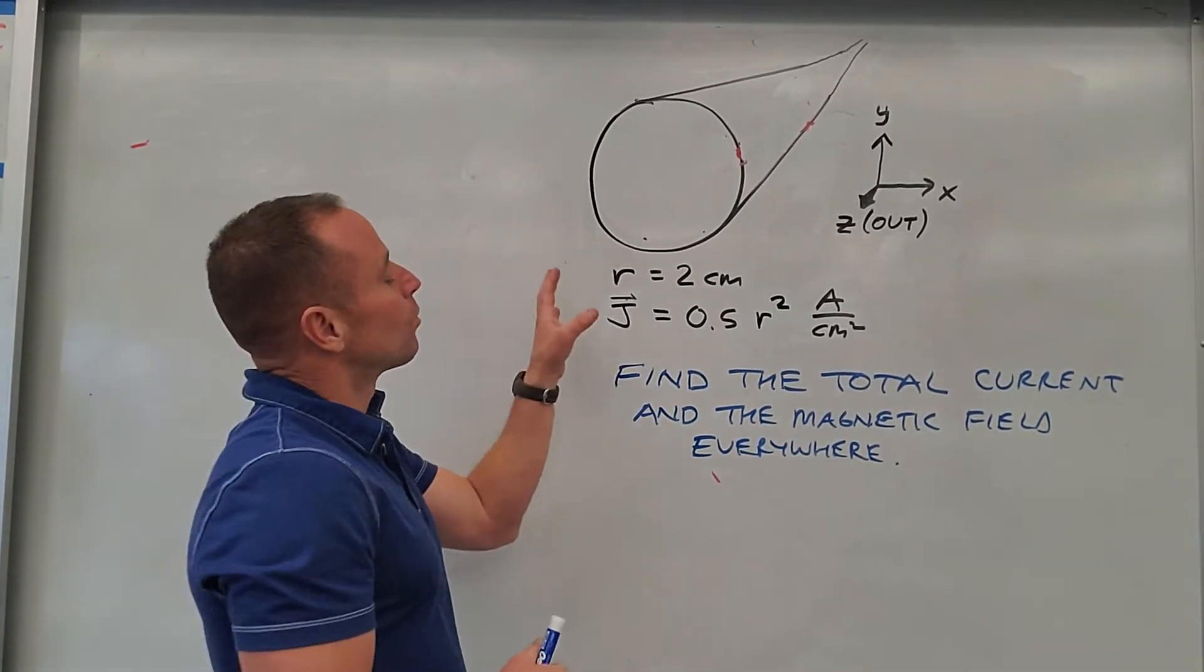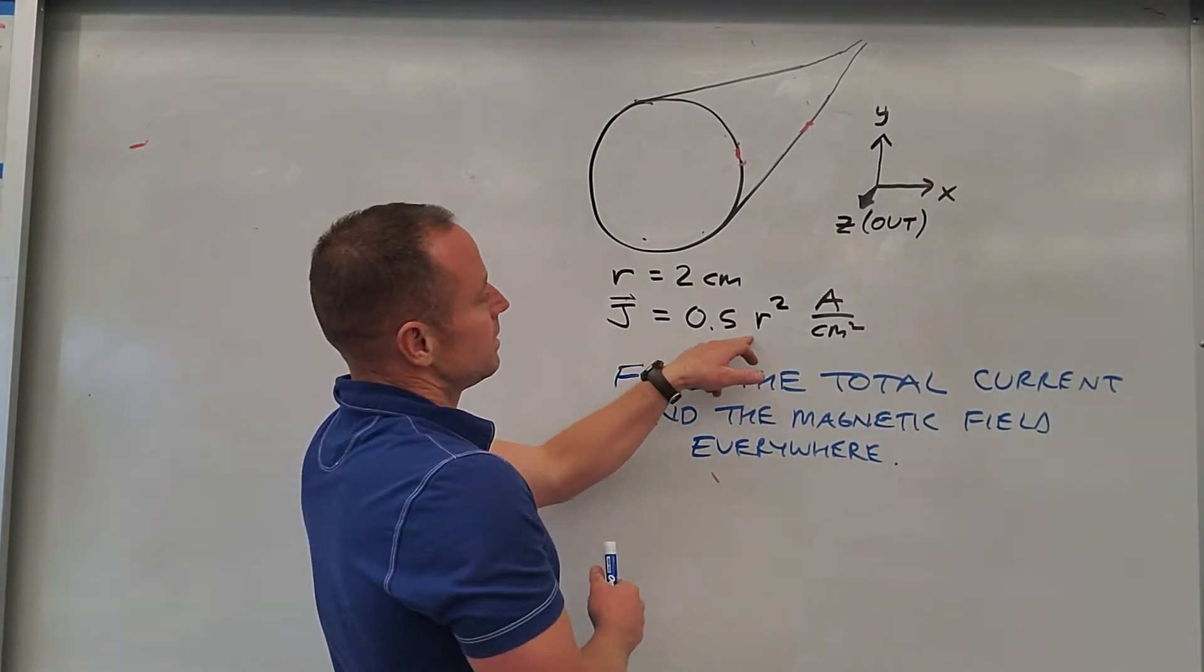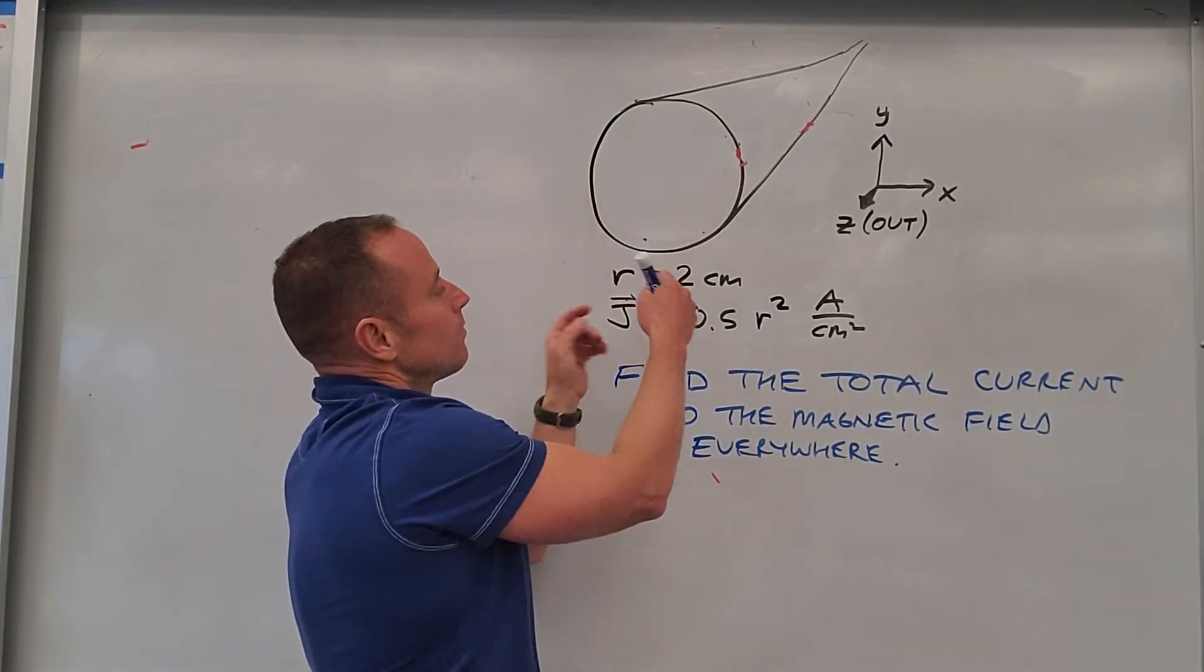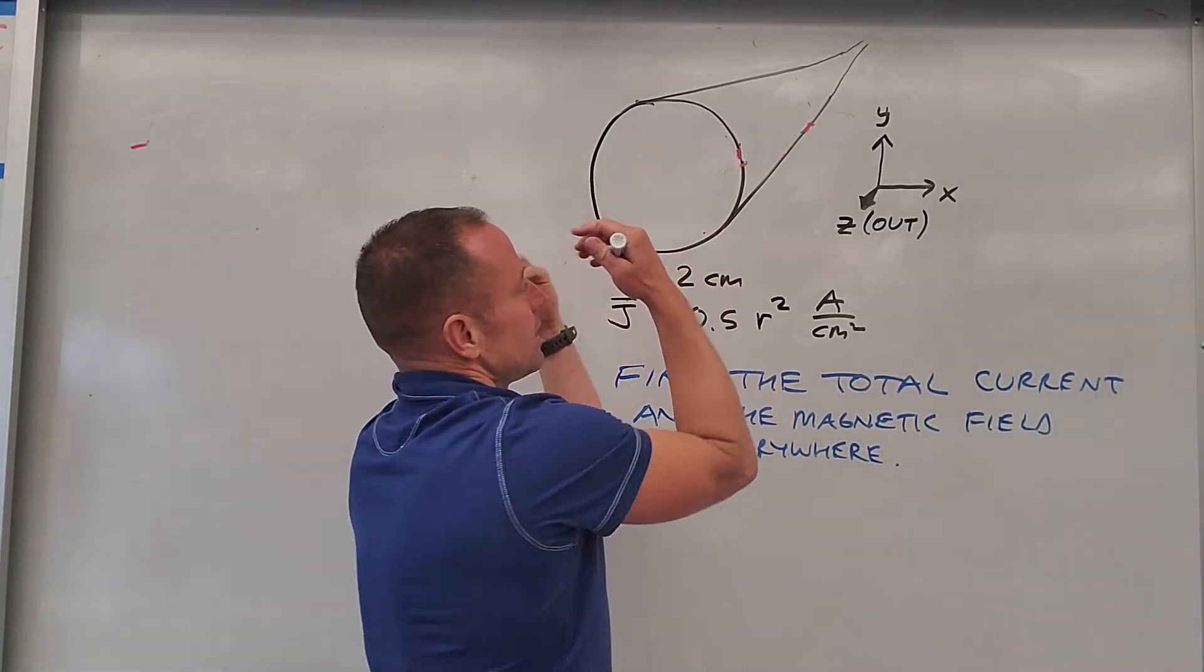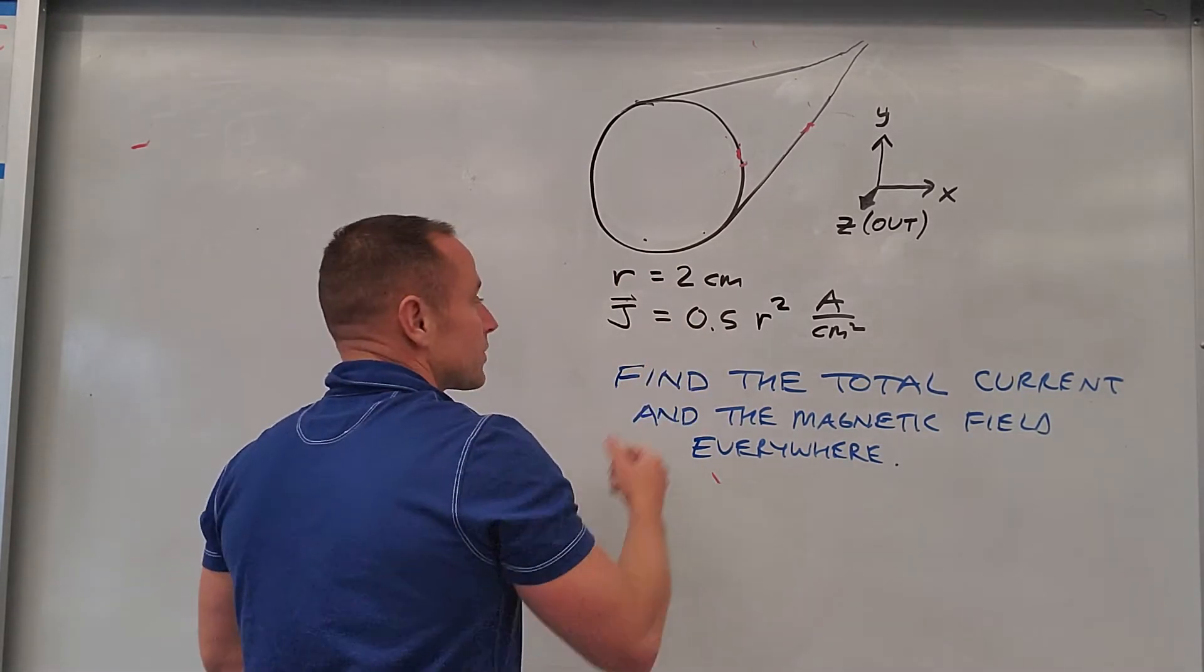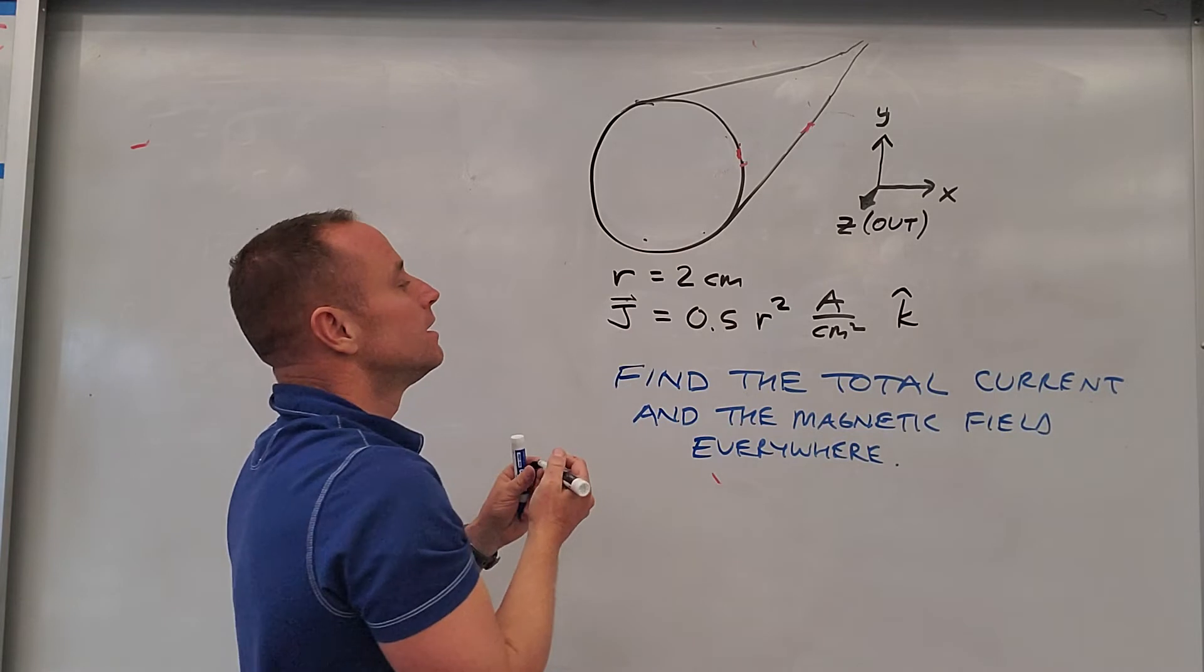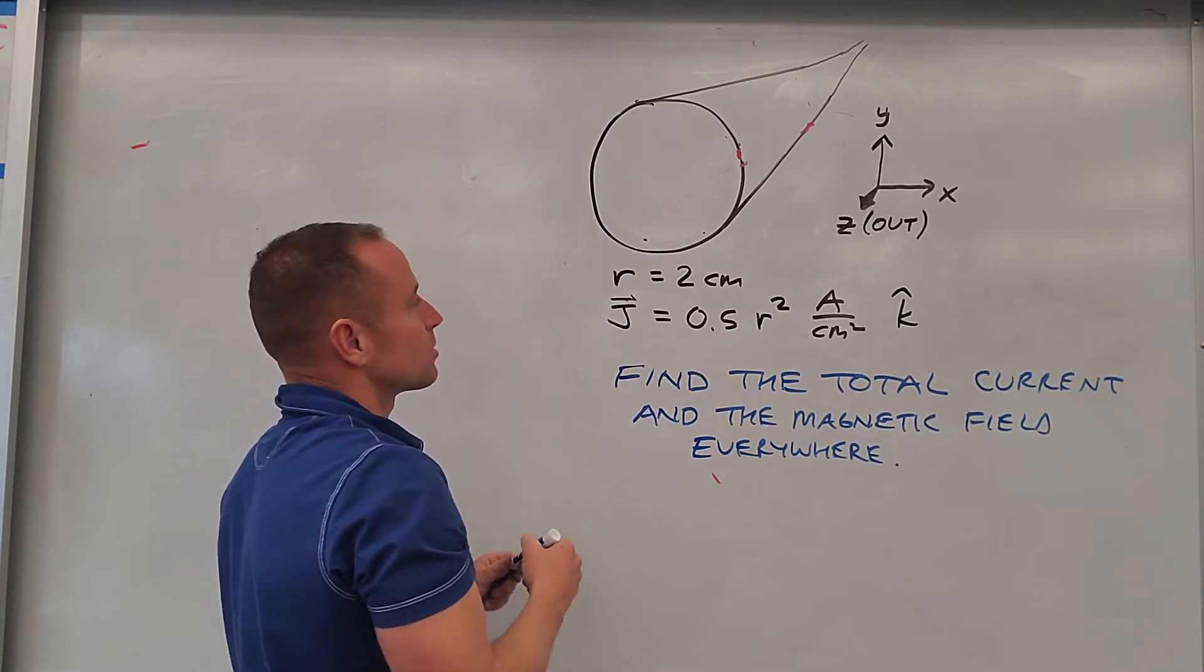Now we'll look at another example, but where the current density is actually changing with radius. So we've got this wire with radius 2 centimeters coming straight at us, and the current density is flowing out of the board in this direction, but it's given like this, 0.5 R squared.